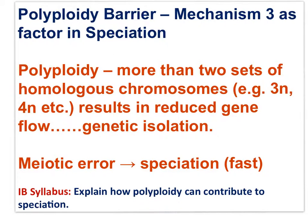The third barrier resulting in sympatric speciation is known as polyploidy. Polyploidy is a condition of having more than two sets of homologous chromosomes — you could have three sets (3n), four sets (4n), six sets, or more. Polyploidy results from meiotic error in gamete formation and causes rapid speciation. Let's take a look at how it happens.